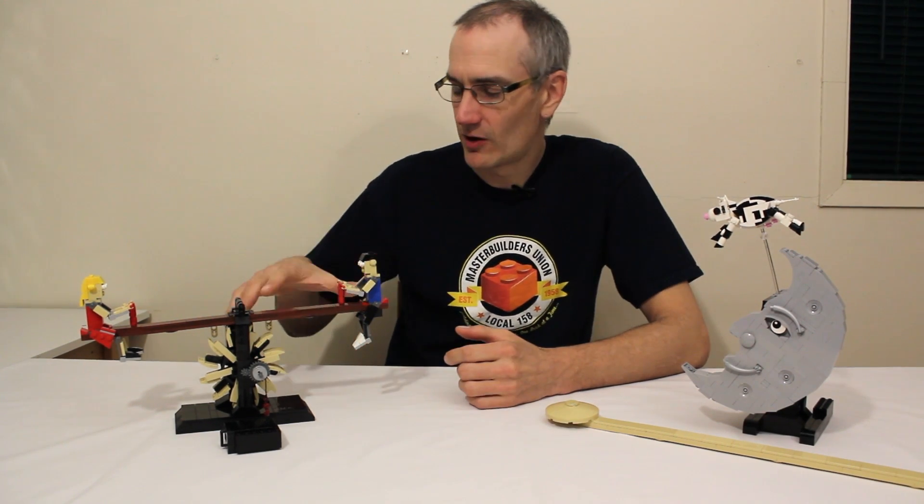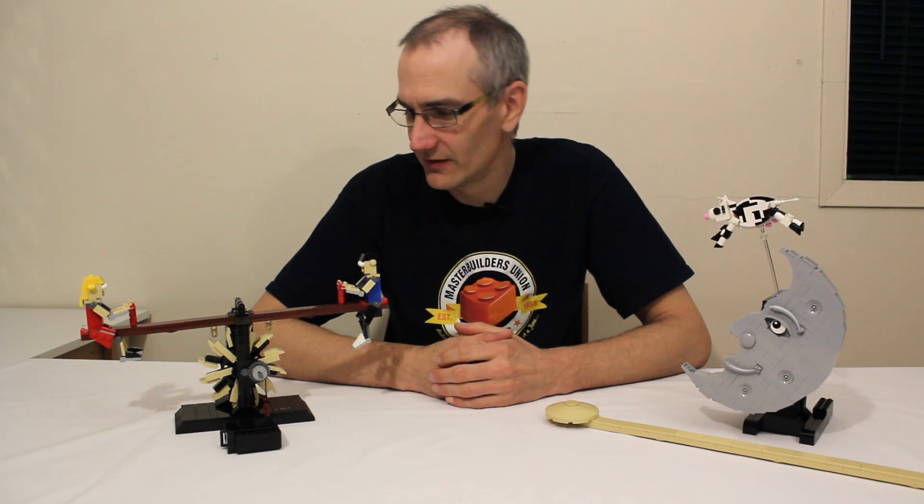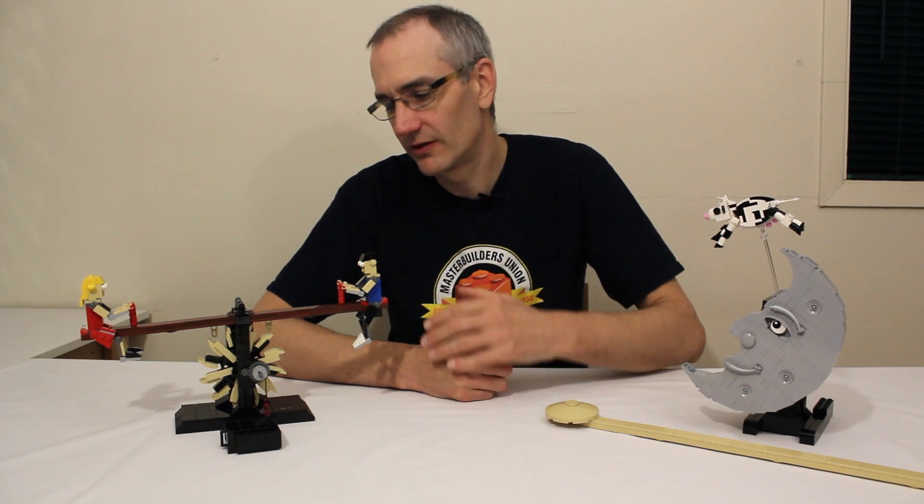Since then, I thought it would be interesting to try and build another model powered in the same way. So I came up with this model, which is of two kids playing on a seesaw, or a teeter-totter as it is often called. There are a couple little things different about this model, so let's take a closer look.